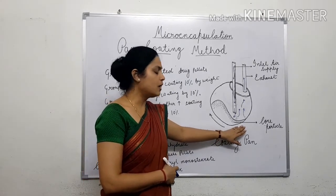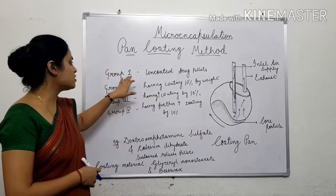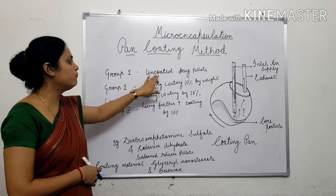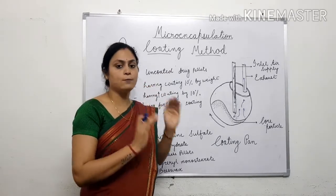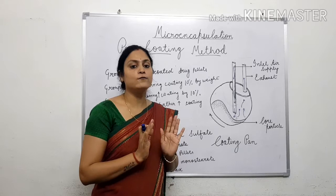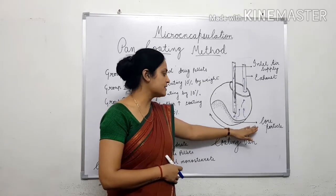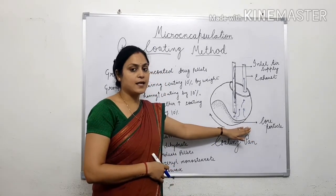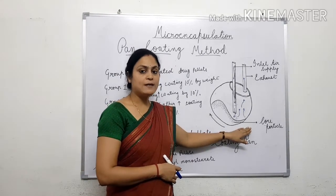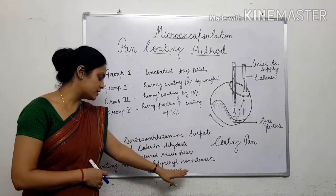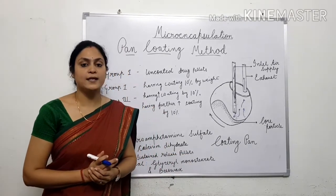If we are initially taking 100 grams of inert substrate, 100 grams of pellets are formed. From these 100 grams, one-fourth part — that is 25 grams — of these pellets are taken out, which constitute Group 1. Group 1 is the uncoated drug pellets — it is only the non-pareil sugar seeds having a coating of drug over them. The remaining three-fourths are coated with glyceryl monostearate and beeswax, which are dissolved in carbon tetrachloride as solvent.